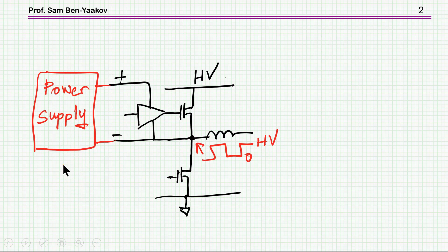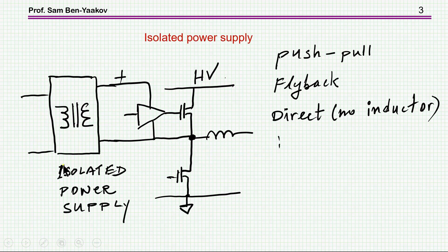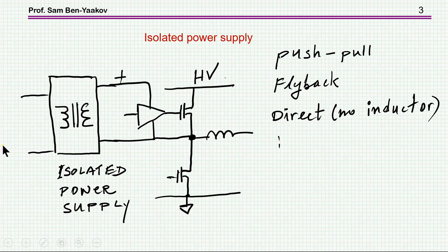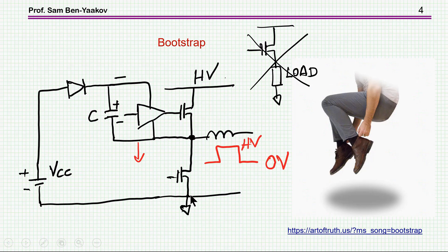There are many ways to solve this. One classical way is to use an isolated power supply, typically through a transformer. This could be a push-pull, a flyback, a direct configuration with no inductor — many configurations are possible. This approach is very conventional and I'm not going to elaborate on it.